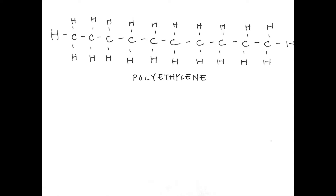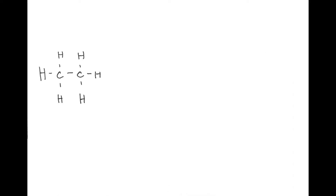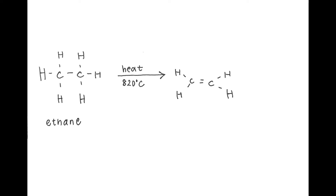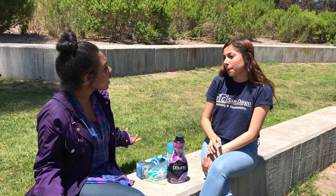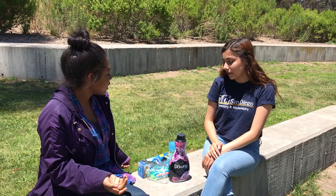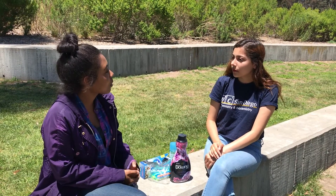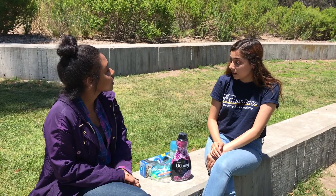Polyethylene is a polymer composed of units of ethylene. Ethylene is made by heating the natural gas ethane to about 820 degrees Celsius, causing the molecule to break apart into ethylene and hydrogen gas. There are actually many variations of polyethylene.